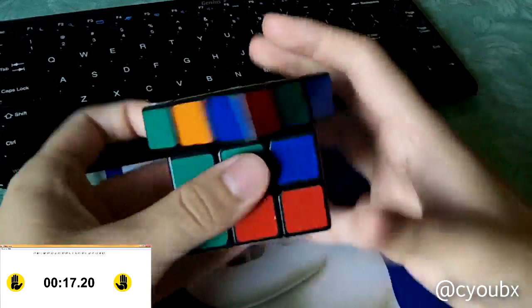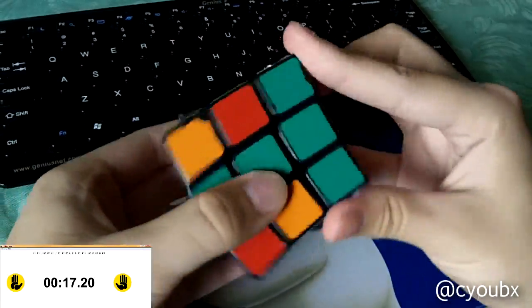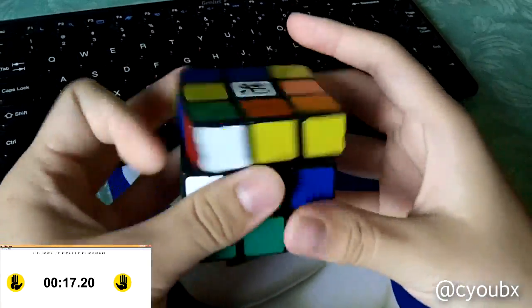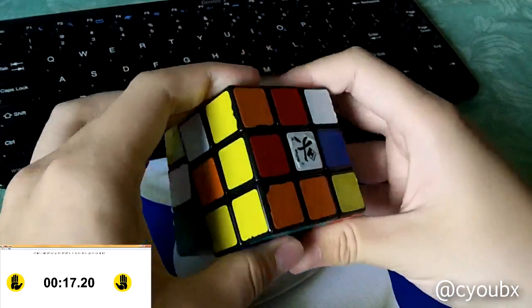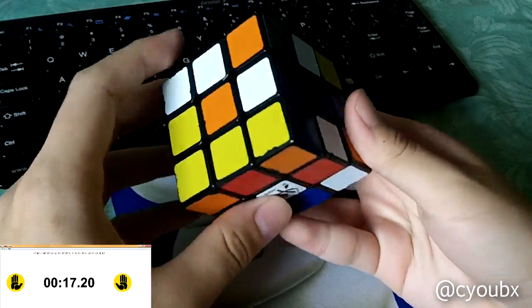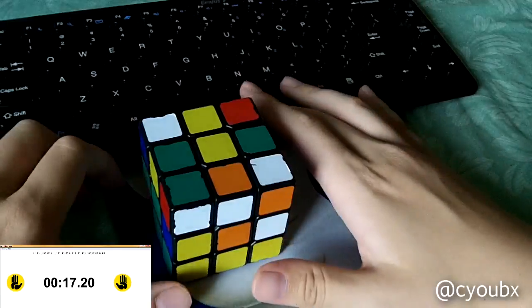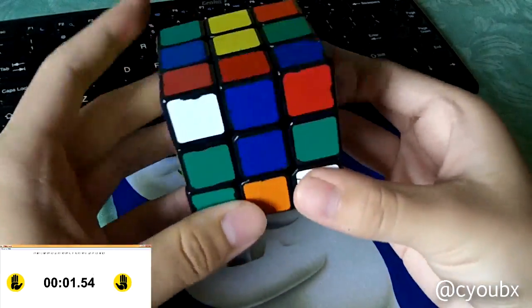Once you find the pairs, don't get excited and start turning quickly. You might lose track of the next pair. Instead, continue to turn at a slow and steady pace and follow the next two pieces you're interested in. Once the current pair is solved, you can continue on to the next pair and repeat.